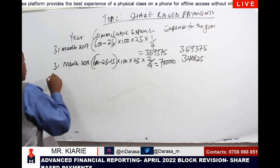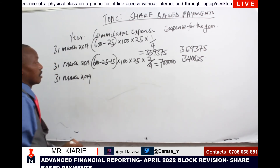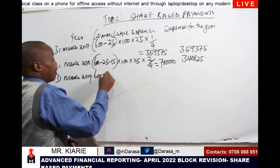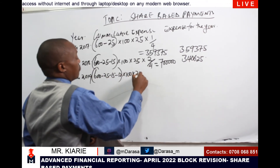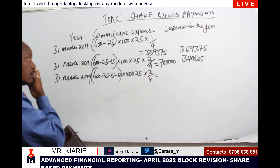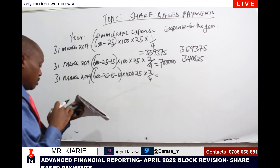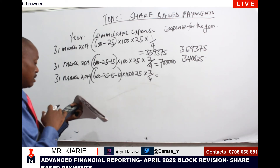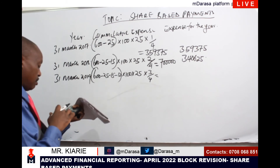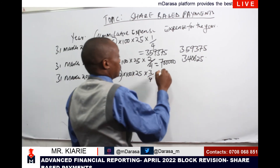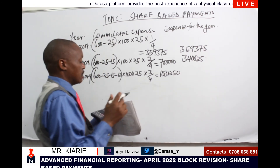For the year ending 31st March 2019, the calculation is: 600 minus 25 minus 15 minus 10, times 100, times 25, times 3 over 4. This gives a cumulative expense of 1,031,250. Subtracting the previous year's cumulative of 700,000 gives an expense for the year of 331,250.